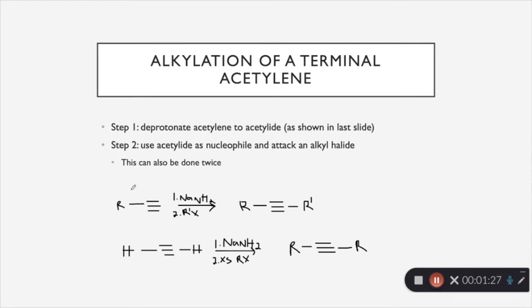So we have right here an example. Step one is going to be to deprotonate the acetylene to acetylide, as shown in the last slide. And then in step two, we're going to use that acetylide as a nucleophile to attack an alkyl halide. And this can also be done twice if you have, in this case, a terminal alkyne on both sides. So you have a hydrogen on both sides of that triple bond.